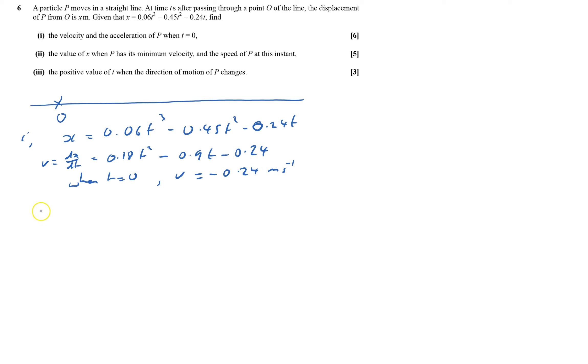That's velocity, and the acceleration equals dv by dt, which equals two times that, is 0.36t minus 0.9. And when t equals 0, acceleration equals minus 0.9 meters per second squared. That's the first bit done.